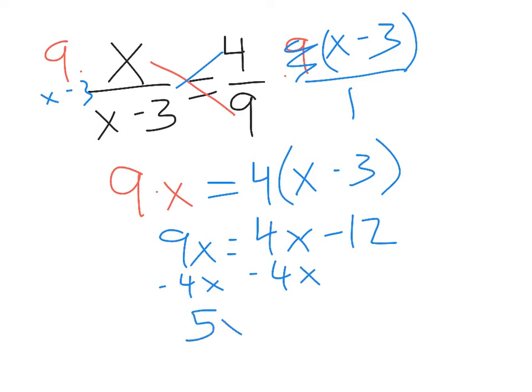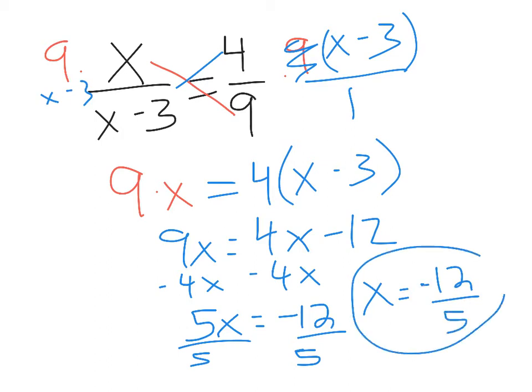So I have 5x equals negative 12, divide, and I end up with x equals negative 12 fifths. And that's my final answer.